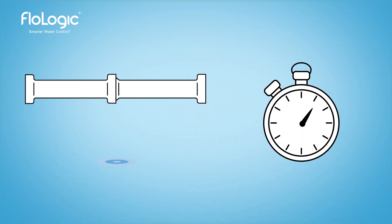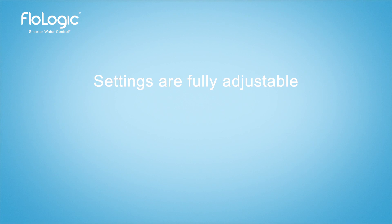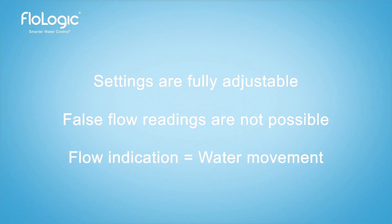FlowLogic automatically shuts off the water when a continuous flow event exceeds the home or away flow time parameters. These settings are adjustable. FlowLogic is not capable of false flow readings — if water flow is indicated, there's certain to be at least a small movement of water through your main water supply.